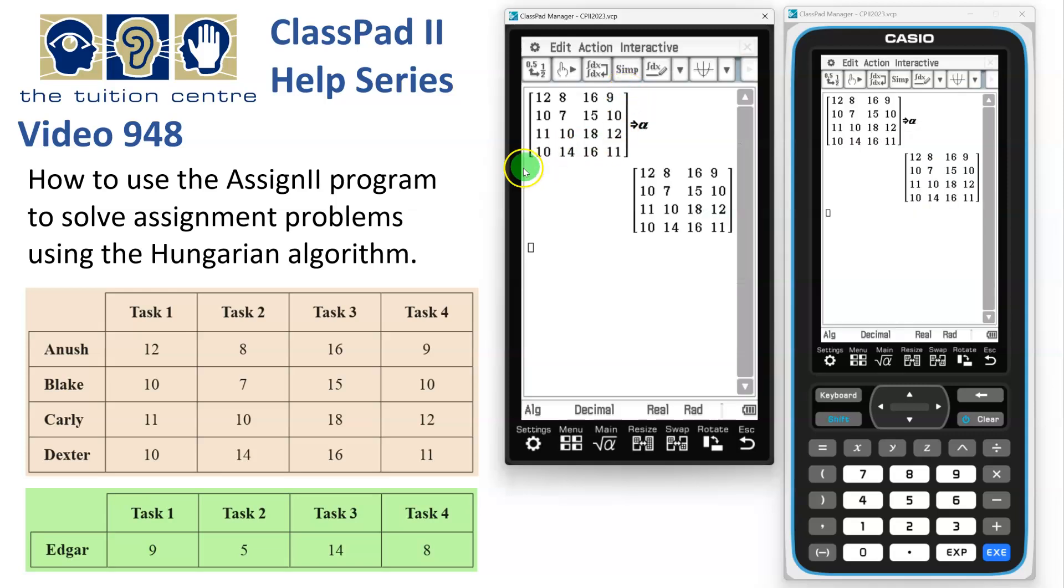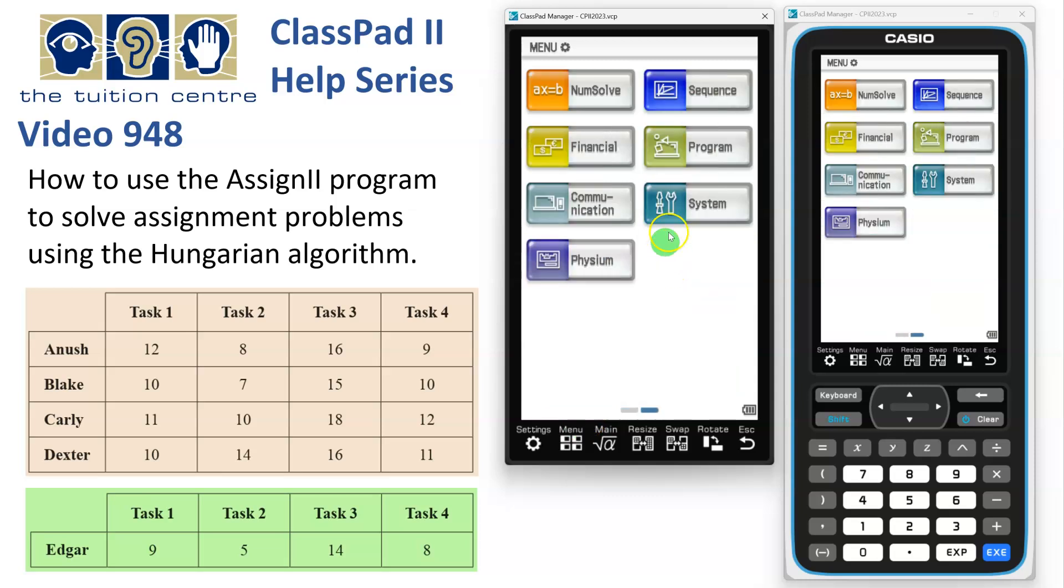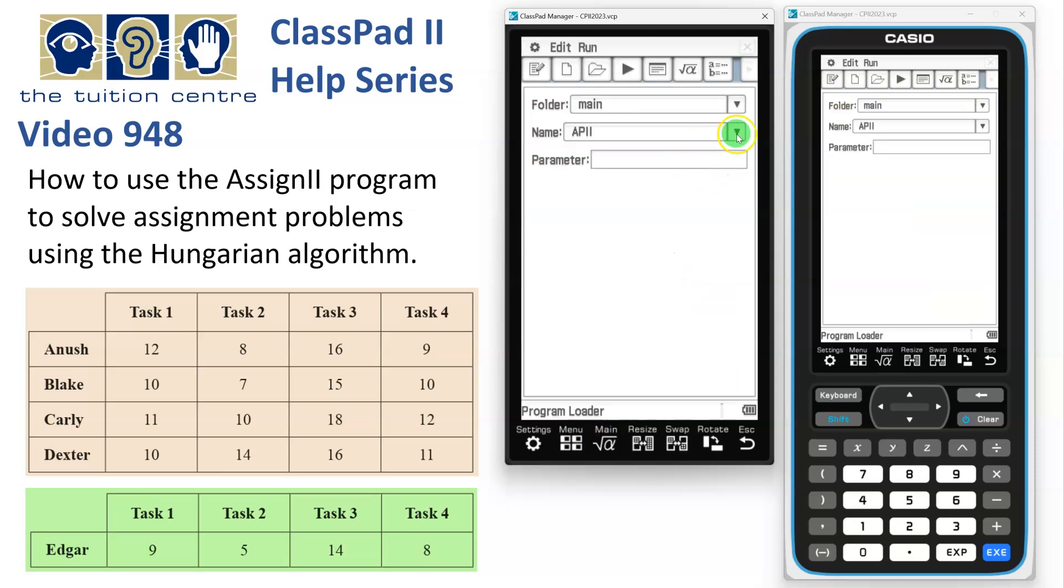Now, in main, the first job we need to do is set up our cost matrix. So here are the costs associated with all four people doing the four tasks. I've stored it into matrix A here already. So once that's done, then we head off into the program and choose the AssignII program.